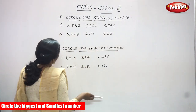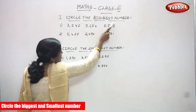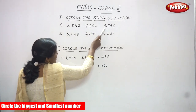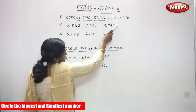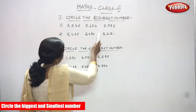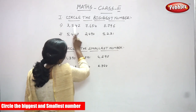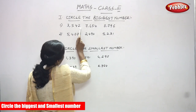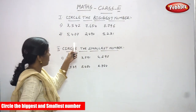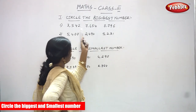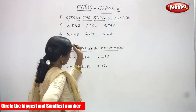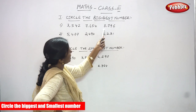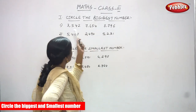Since 8000 is the greatest, the number starting with 8000 is automatically the biggest number. So in the thousands place: the first number 3542 has 3, the second number 7654 has 7, and the third number 8796 has 8. Eight thousand is the greatest because 8 is in the thousands place, so 8796 is the biggest number.